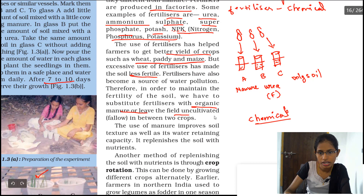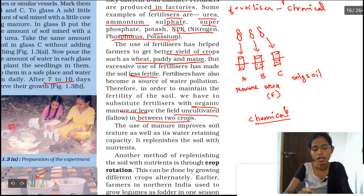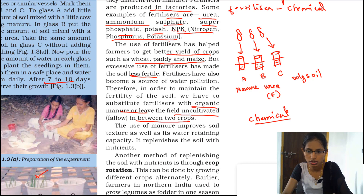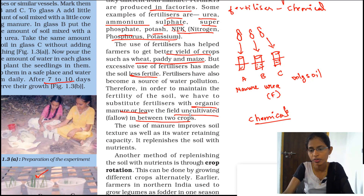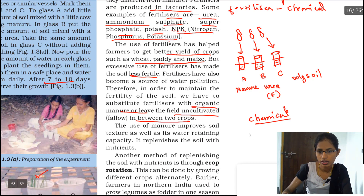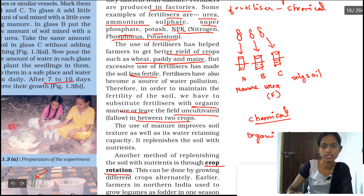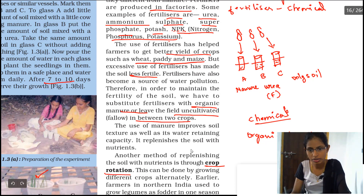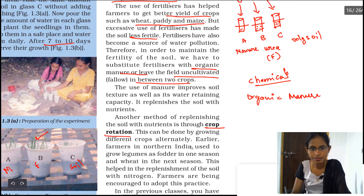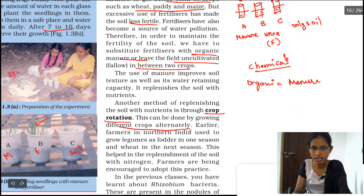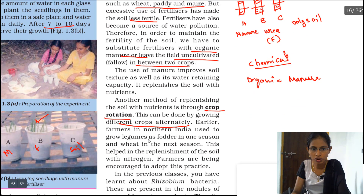To minimize these problems, we should use organic manures, or leave the field uncultivated between two crops. After one crop the soil nutrients are lost, so for the next crop we need to restore them — either by using organic manure or by following the method called crop rotation, where different crops are grown alternatively.